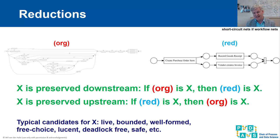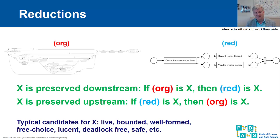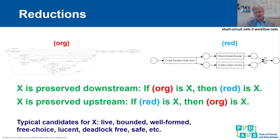What are typical candidates for property X? This could be well-known properties like liveness, boundedness, well-formedness, the free choice property. But it could also include newer topics like lucency, which I will explain in the second part of my talk. Note that in this paper, the focus is on well-formed nets. So if we have workflow nets, we always short-circuit them — the final place is connected back through the source place through an additional transition.